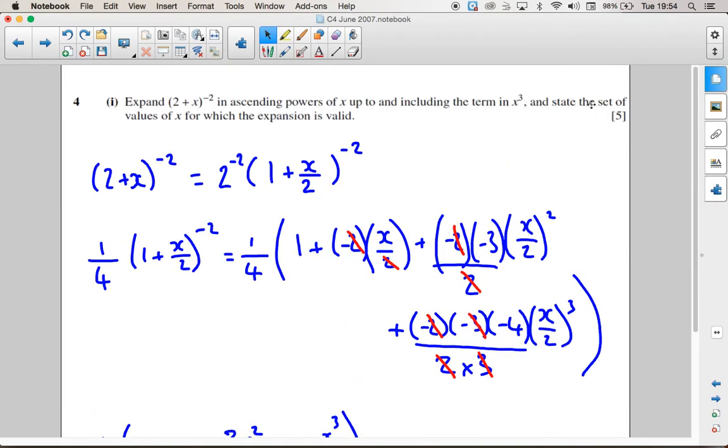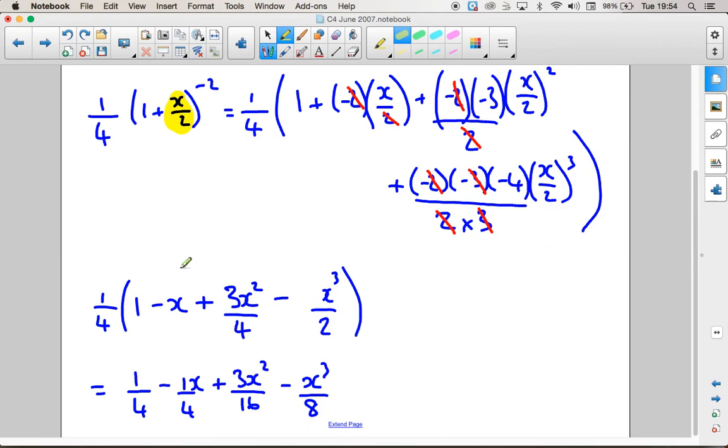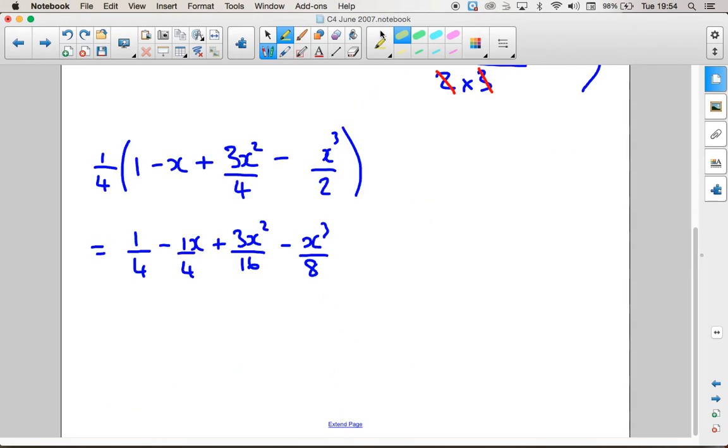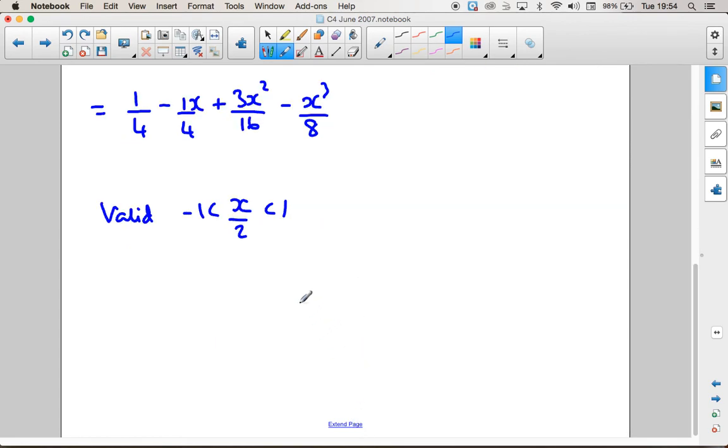It also asks us to state the set of values for which this expansion is valid. So this expansion is valid when this term here is between minus 1 and 1. So it's valid when x over 2 is less than 1 but more than minus 1. This isn't acceptable - we have to write down when x is valid. So if we double both sides, it's valid between minus 2 and 2.